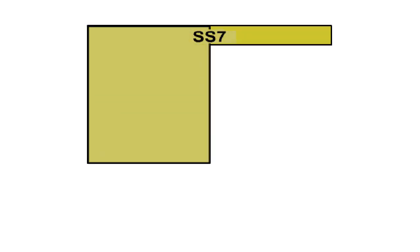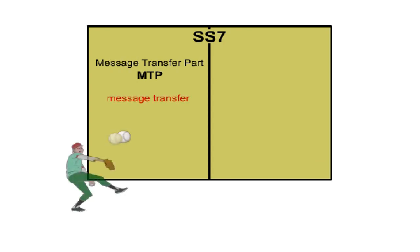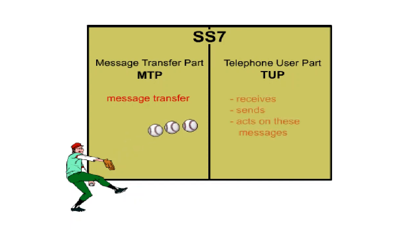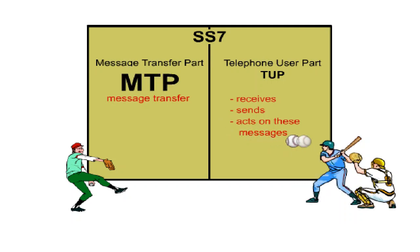The basic SS7 version consists of two parts. The Message Transfer Part, MTP, which is responsible for message transfer. And the Telephone User Part, TUP, on the user's side, which receives, sends and acts on these messages. Let's turn our attention to MTP first.